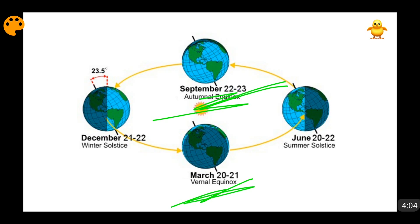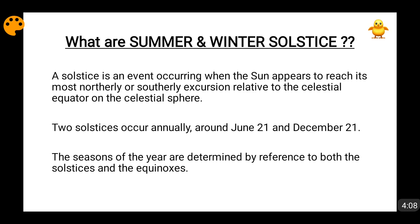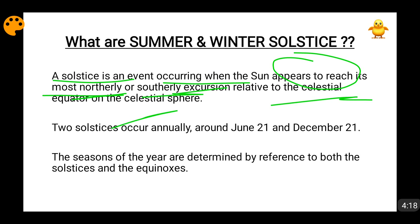When we talk about Solstice, it is an event when the Sun appears to reach its most northerly or southerly position with respect to the celestial equator. The northerly limit of the Sun will be the Tropic of Cancer, and the southerly maximum position of the Sun will be the Tropic of Capricorn.